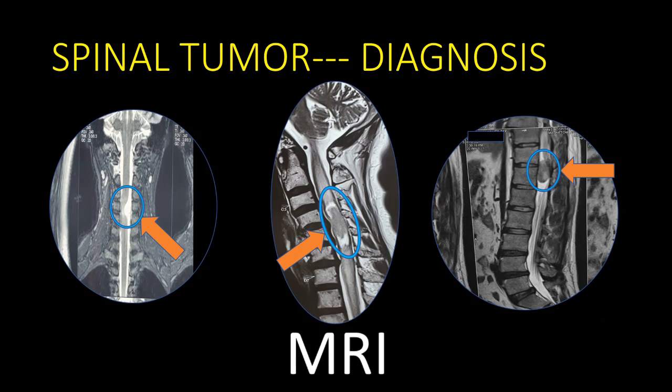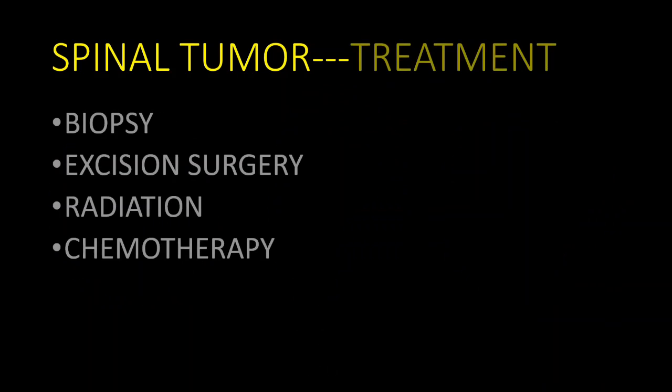MRI also lets us know whether it is an extradural, intradural extramedullary, or intramedullary tumor. This location of the tumor is important for prognostication.